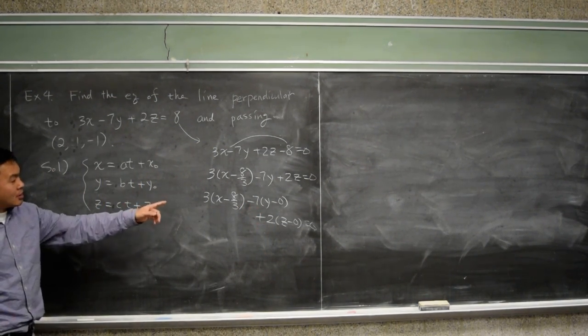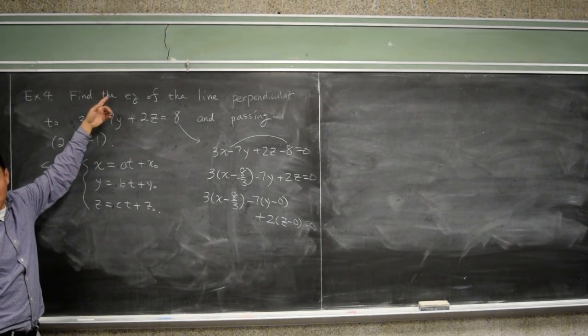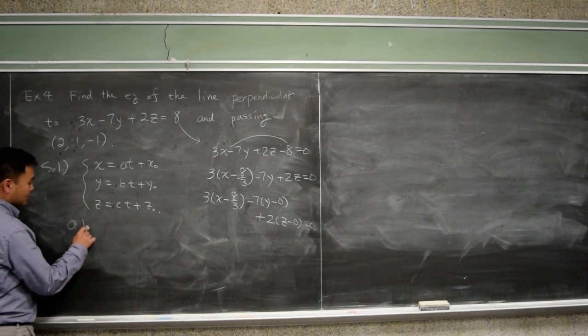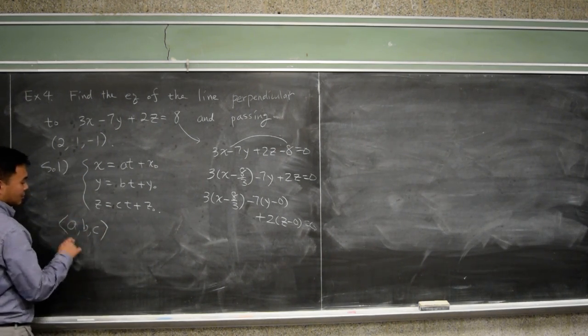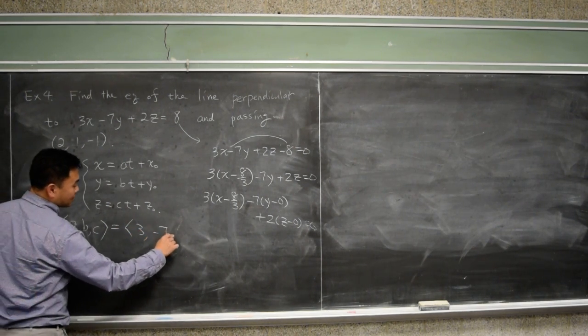Therefore, 3, negative 7, comma 2 should be the same as the direction of this line because the line is perpendicular. So we can take A, B, C as 3, negative 7, comma 2.